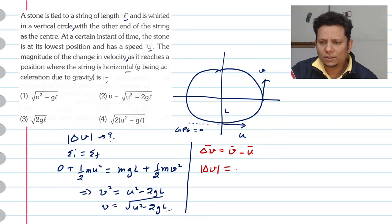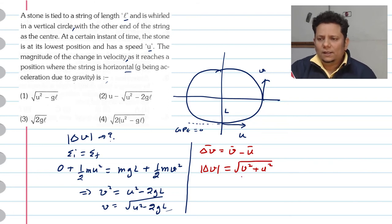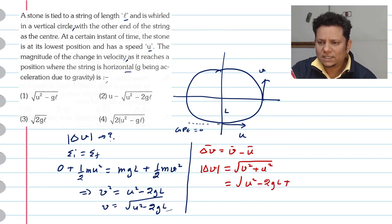This will be equal to square root of V squared plus U squared. When we write this velocity, this will be equal to V squared, which equals U squared minus 2gL plus U squared.